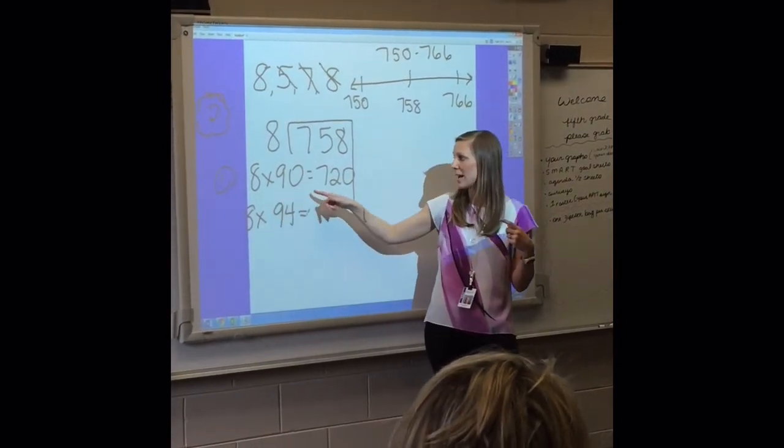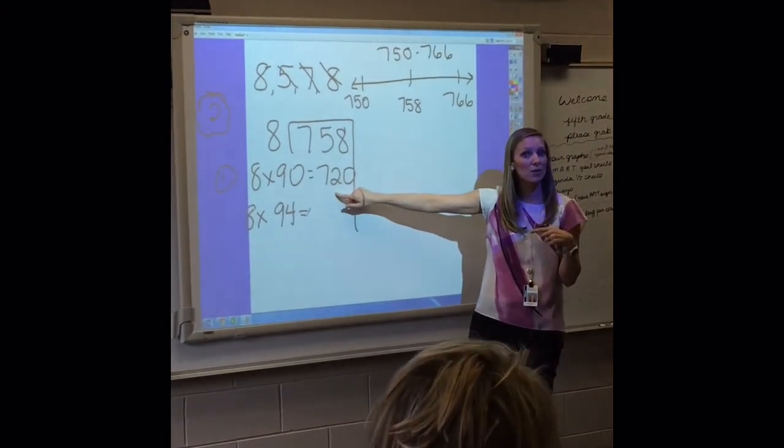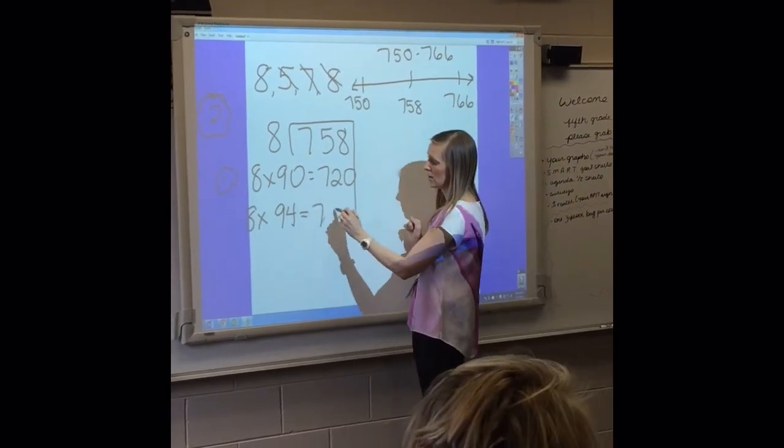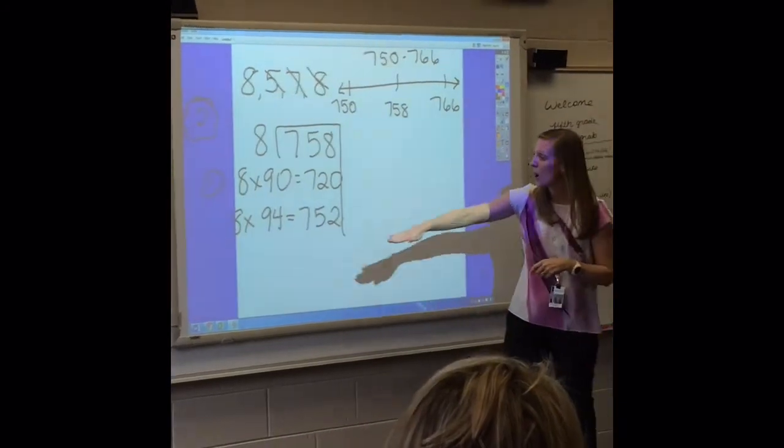And we already know 8 times 90 is? 720. So 720 plus 32 is 752. Perfect.